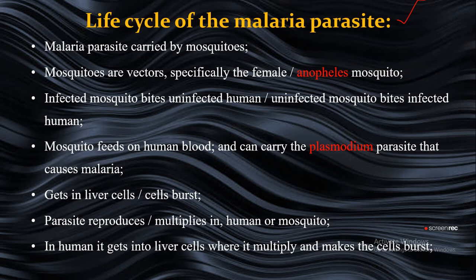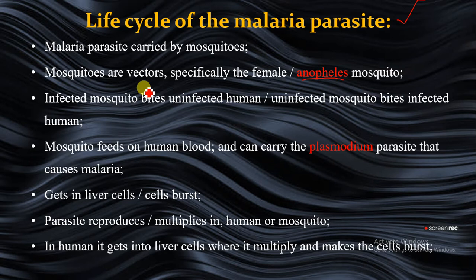The malaria parasite is carried by mosquitoes — specifically the Anopheles mosquito. Mosquitoes are vectors, meaning they aid in the transfer of the parasite. Specifically it is the female Anopheles mosquito.